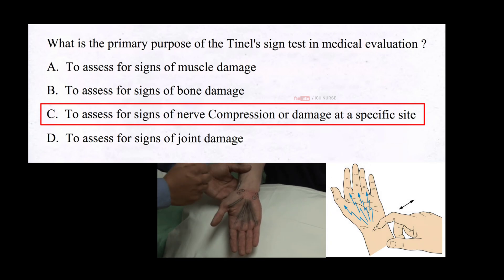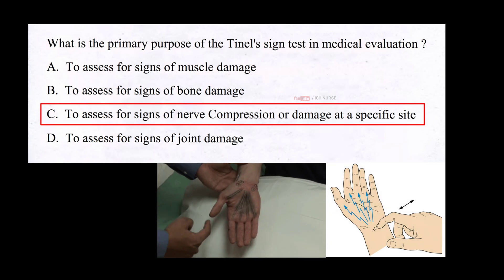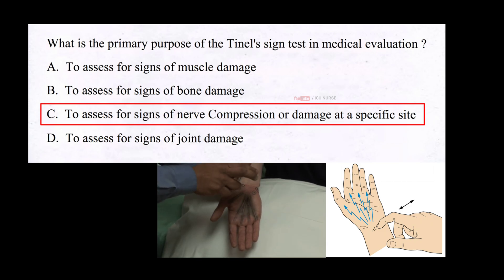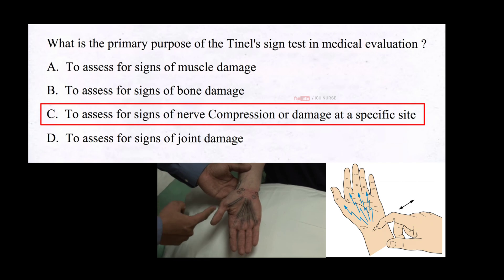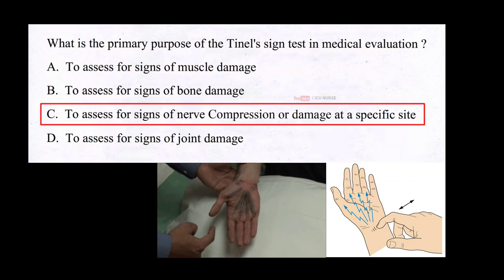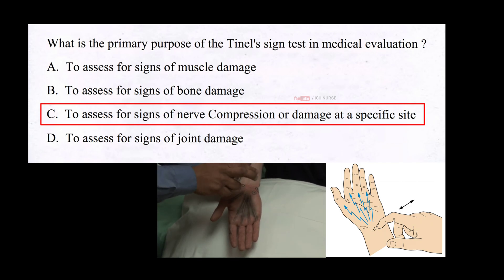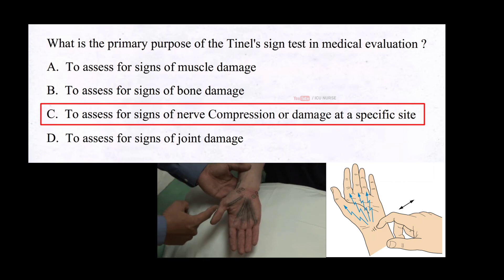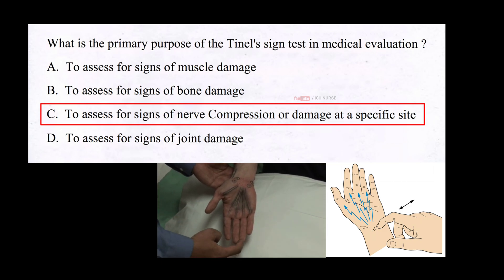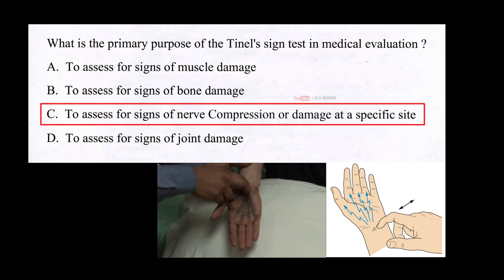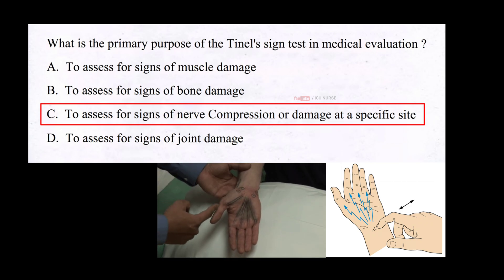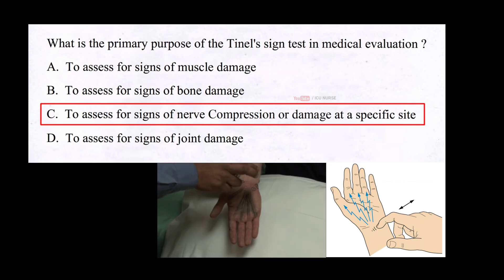Tinel's sign is a medical test used to assess nerves in the body. It involves gently tapping or percussing a specific area where a nerve pathway runs. The purpose is to check for signs of nerve compression or injury. If the nerve is irritated or compressed, tapping that area may cause a tingling or shock-like sensation along the nerve's pathway, helping doctors identify potential nerve-related issues.